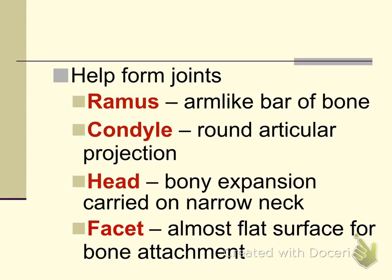Some bumps on a bone help form a portion of a joint. A ramus (plural: rami) is an arm-like bar of bone that forms almost an L-shape. A condyle is a round portion attached to another portion of bone. A head is similar to a condyle but more pronounced, sticking out more. A facet is a flat surface where another bone attaches.